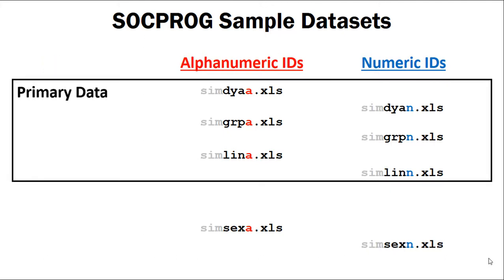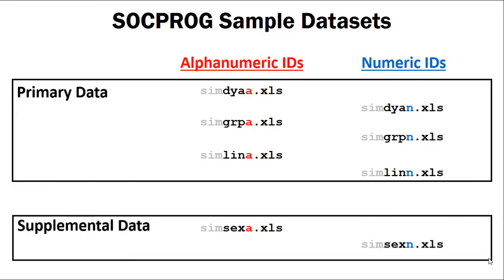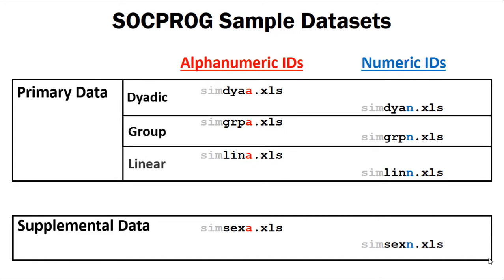For each study we have access to primary data and supplemental data. In both cases the supplemental data is the sex and age of each individual, so the supplemental data has the word 'sex' in the middle of its title. There are three files of primary data per study because Sockprog accepts data in three different formats. Each study provides similar data in each of these formats. The three formats are linear, dyadic, and group. In the file names, 'lin' indicates linear, 'dia' indicates dyadic, and 'group' indicates group data.